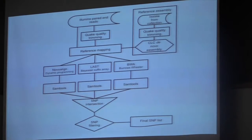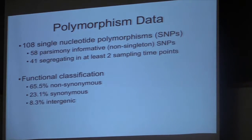The result of passing these 235 complete genomes through this pipeline yielded 108 single nucleotide polymorphisms. Fifty-eight of them were parsimoniously informative, meaning that they were observed in more than one isolate. Forty-one of them were segregating in two or more sampling time points. And in terms of the functional classification, approximately 65% of them were non-synonymous mutations, 33.1% did not cause a change in the amino acid sequence, and the remaining 8% were found in non-coding regions of the genome.